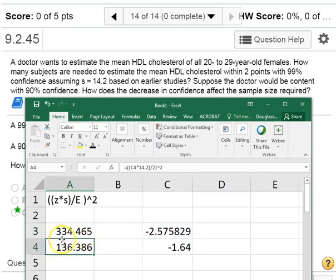And you get 335 people we need in the study. Now, we have to round up always because you can't have a partial person in your study.